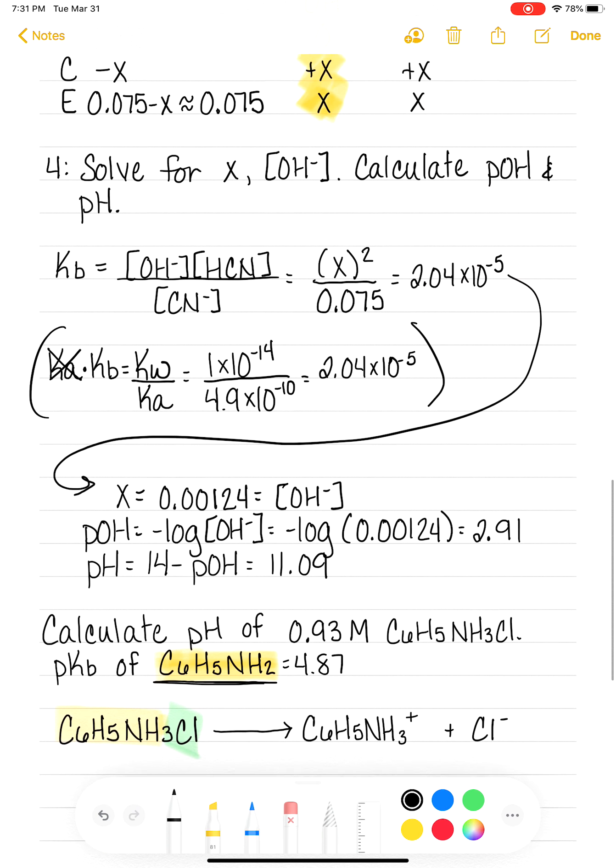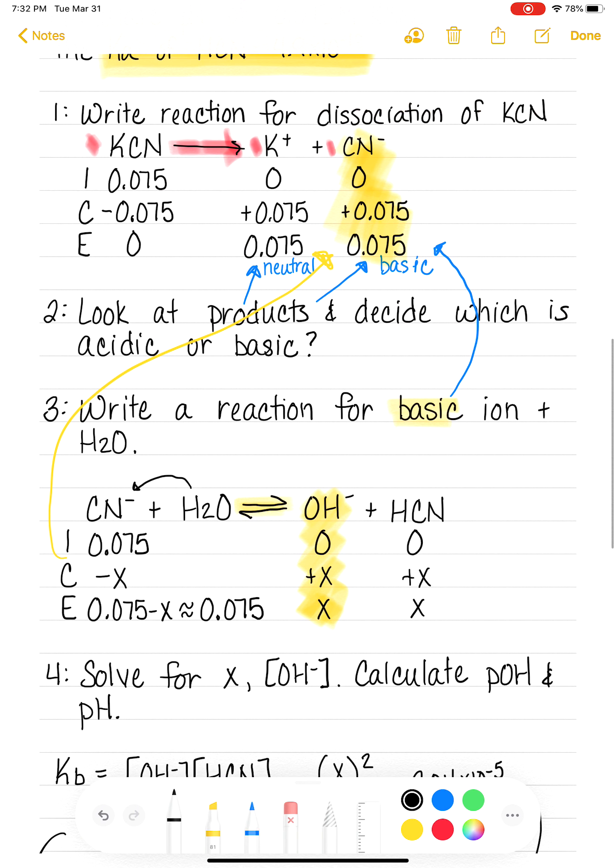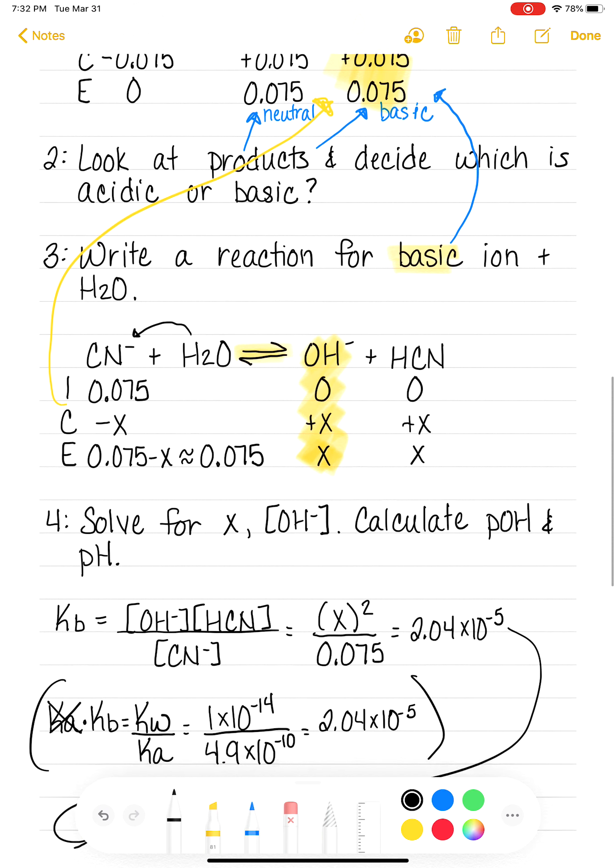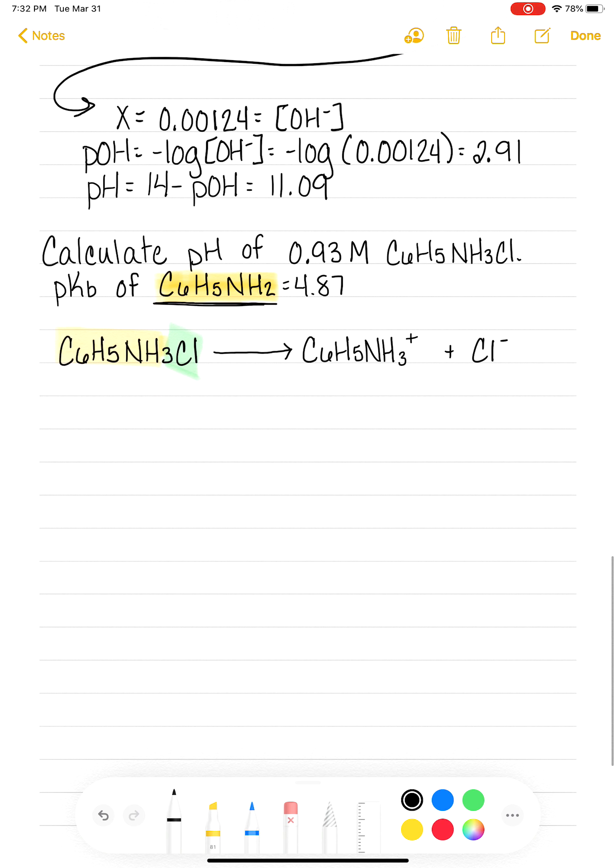So that's our step one. And let's look back at what we did in the first example. After we wrote the reaction for dissociation, we made an ice table. So let's do that. Our initial concentration of C6H5NH3Cl was 0.93. And initially we have no products. We have a forward reaction here, which means that all of the 0.93 is going to dissociate. Because the stoichiometry is one to one to one, we're going to be making 0.93 of each of our products. And at the end, we'll have no reactant left. We'll have 0.93 of each one of our products.